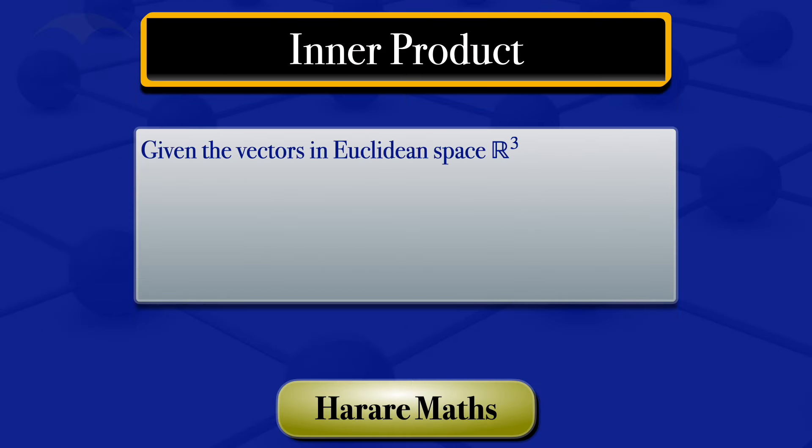I'm given the vectors in Euclidean space R³: u which equals (2, 1, -1), and v which equals (1/2, 2/3, -1/4). In this tutorial, I'm going to find the inner product of u and v, and then go on and normalize u.